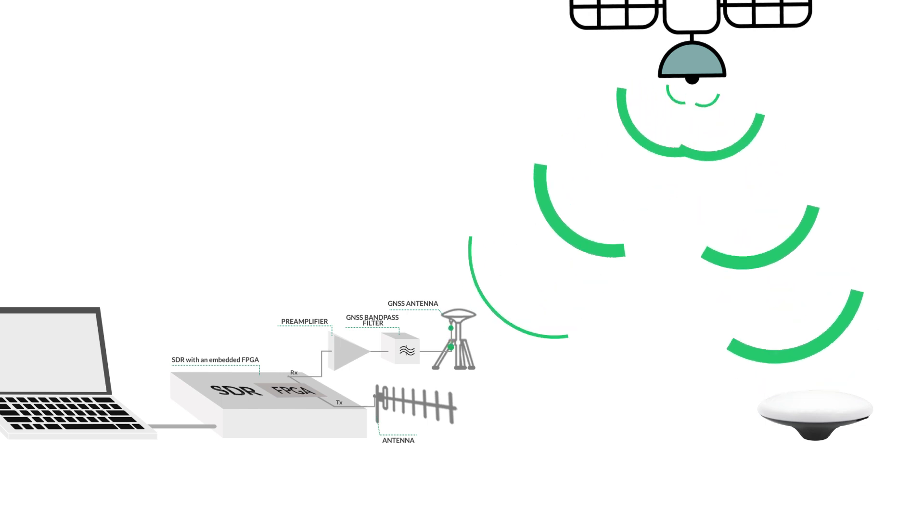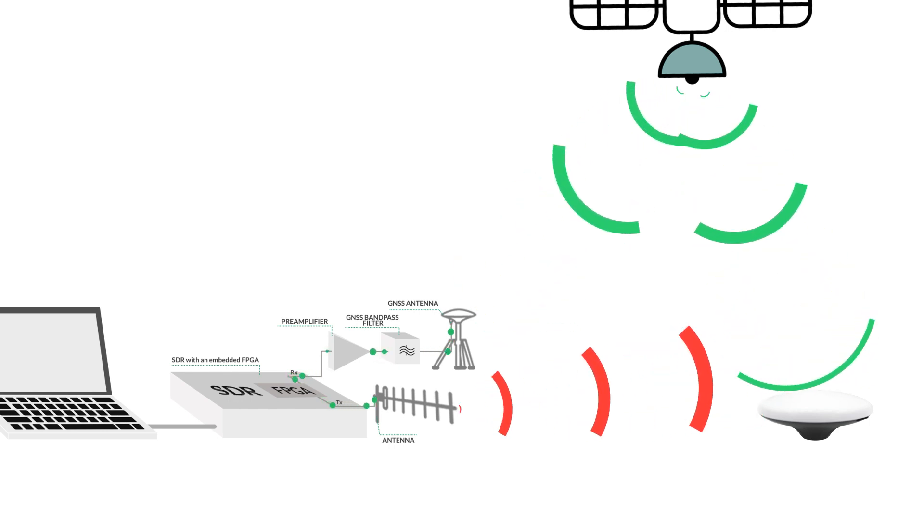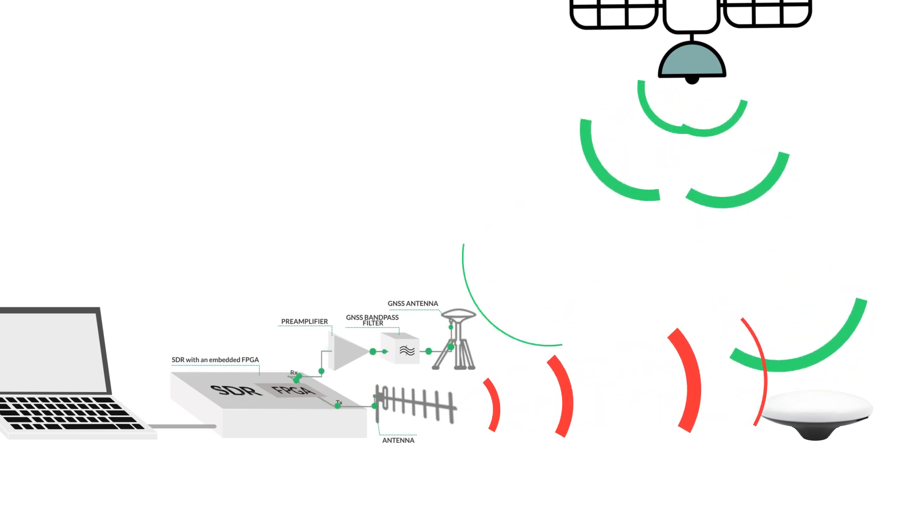Other types of attacks such as record and playback and meaconing transpire. It's simple to record a live signal and replay it or rebroadcast it in real time. Future prospective developments on GNSS signal authentication will not work in that case.